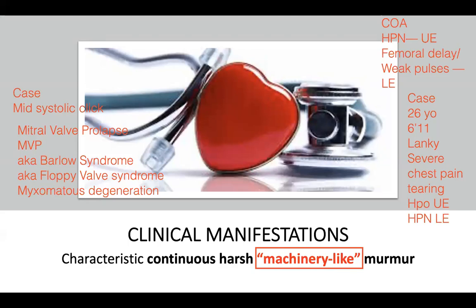For Marfan syndrome, the deficient structural protein is fibrillin-1. If the same patient also presents with blurring of vision, the finding would be subluxation of the lens, or ectopia lentis — which is why there is blurring of vision. Note that Ehlers-Danlos does not classically present with ophthalmologic findings.